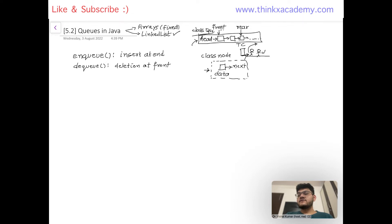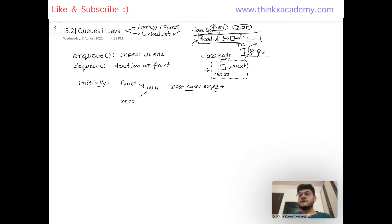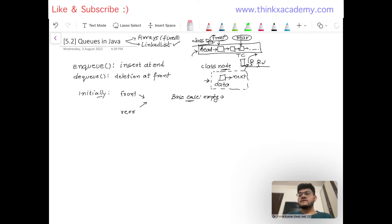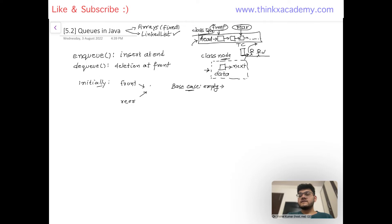Our queue class will have a constructor which will initialize both front and rear. Initially, our queue will be empty, so front and rear both are going to point to null. If we want to enqueue any element, we first create an object of the node class, which allocates the data and creates the next pointer. We then change front and rear to point to that element. The base case is when the linked list is empty — front and rear both point to the new node being inserted.